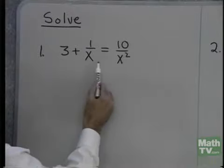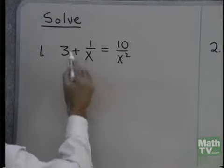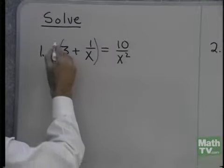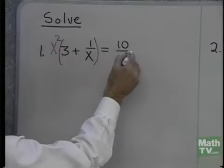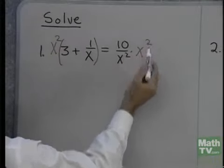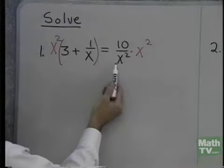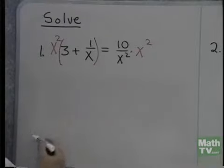What I'm going to do to begin this problem right here is clear it of fractions. I'll take my least common denominator, which is x squared, and simply multiply both sides by it. Now, I'm not going to let x be 0 anyway, so I know I haven't multiplied both sides by 0.